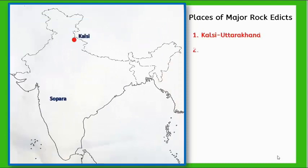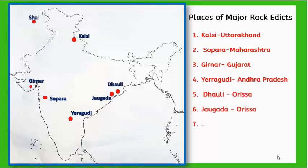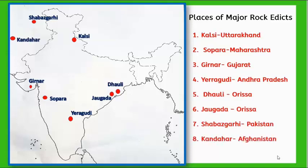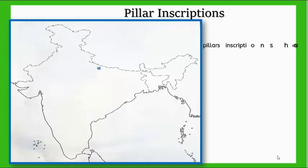Important places of Major Rock Edicts: 1. Kalsi, Uttarakhand; 2. Sopara, Maharashtra; 3. Girnar, Gujarat; 4. Yerragudi, Andhra Pradesh; 5. Dhauli, Orissa; 6. Jaugada, Orissa; 7. Shahbazgarhi, Pakistan; 8. Kandahar, Afghanistan.